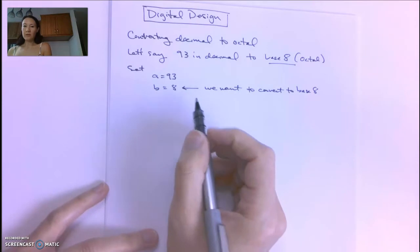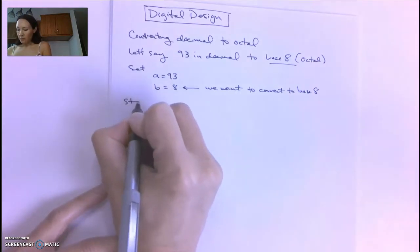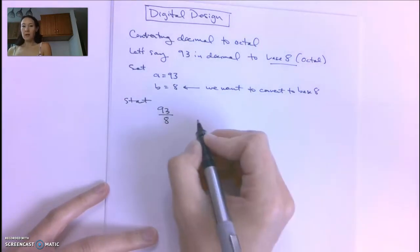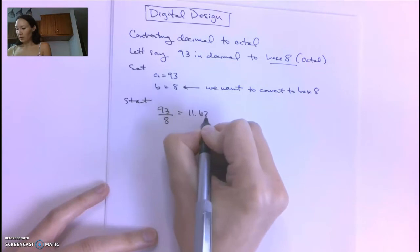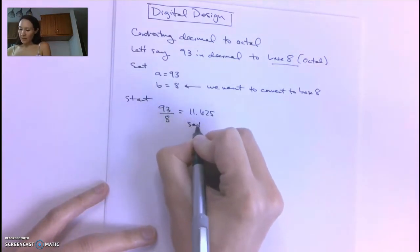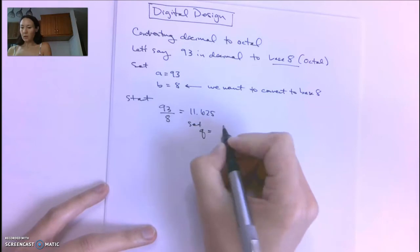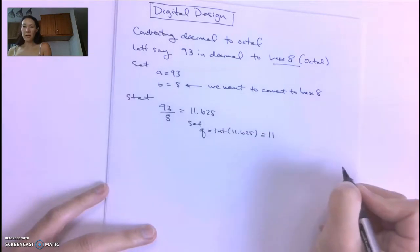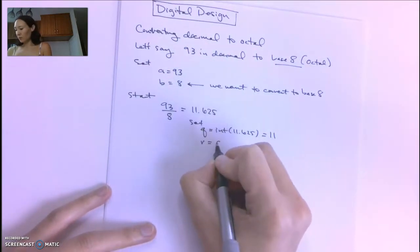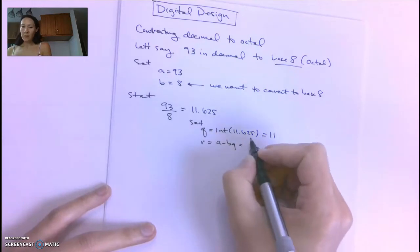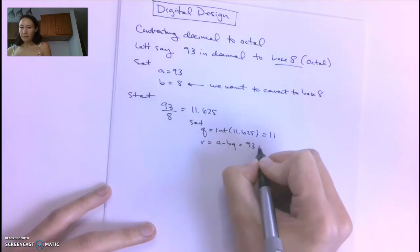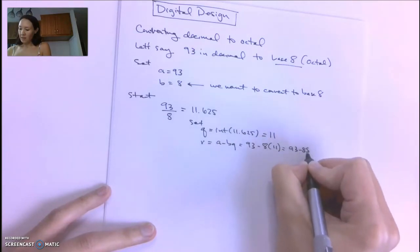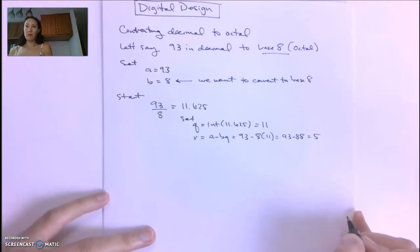We start the iterative division algorithm. We take 93 and divide by 8, which gives us 11.625. Then we set Q equal to the integer part of 11.625, which is 11. And we set R equal to A minus BQ. That's 93 minus 8 times 11, which equals 93 minus 88, or a remainder of 5.